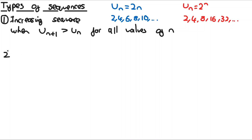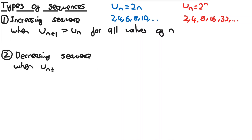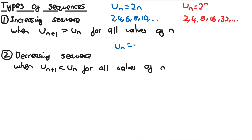The second type is a decreasing sequence. This is when the terms keep getting smaller and smaller. More formally: u(n+1) < u_n for all values of n. For example, u_n = 7 − 3n gives the sequence 4, 1, −2, −5, −8, and so on — a decreasing sequence because the terms are getting smaller.